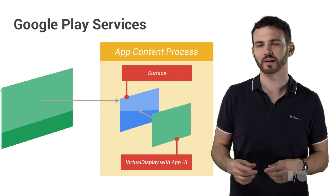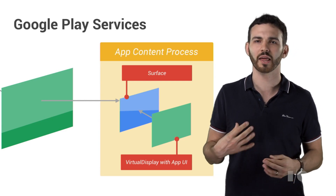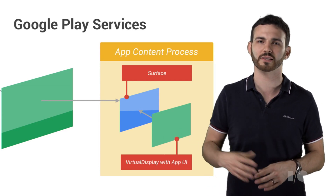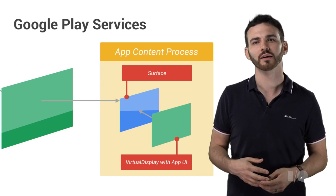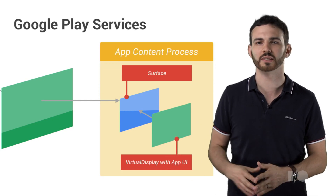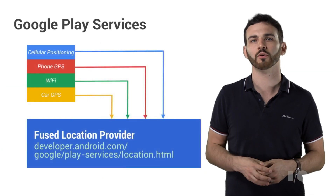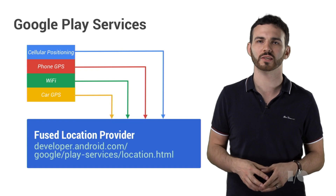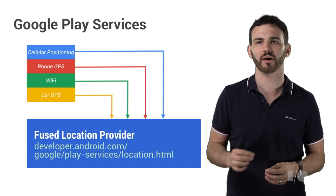There are two core principles behind this architecture. The first is flexibility — using texture views in an XML layout allows us to lay out the windows arbitrarily, and means we can take advantage of the full Android layout system, including animations. The second is security and stability. By keeping clients rendering in their own process, we can isolate problems from the rest of the system and ensure that apps don't have access to any data that they shouldn't. We also want to make sure that existing apps on the phone can take advantage of the improved location signals that are available from the car, so we've rolled these signals into Google Play Services' Fused Location Provider.